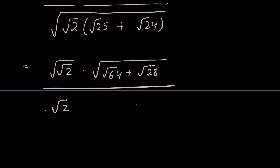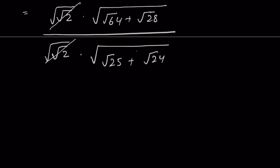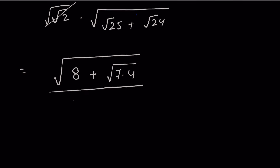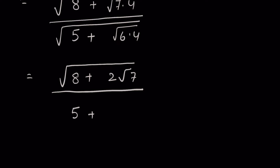Since square root of 2 is a common factor in numerator and denominator, we can cancel it. Then square root of 64 is 8, plus square root of 28 which we write as 4 times 7, under square root, upon square root of 25 is 5, plus square root of 24 which we write as 4 times 6 under square root. This simplifies to 8 plus 2 times square root of 7, upon 5 plus 2 times square root of 6, all under square root.